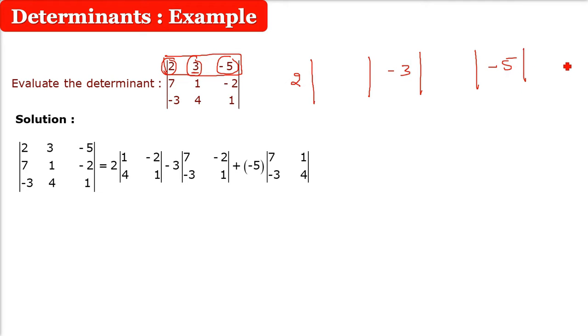Now you see what will come. Whenever you do this 2, find out 2, whichever row and column this 2 comes, you leave it. Other values you have to write. 1, 4, negative 2, 1. 1, negative 2, 4, 1.